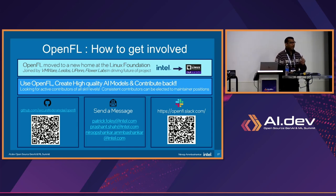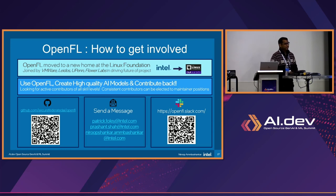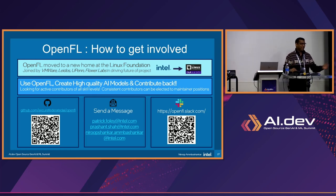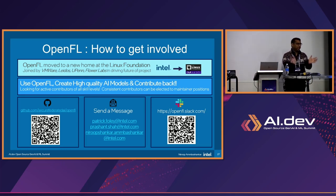Q: You're building on top of gRPC — is there a roadmap plan to integrate with more proprietary offerings like GCP Confidential Spaces, AWS, or Azure offerings? A: Yes. Privacy-preserving machine learning is its own domain. We are built on top of Gramine because SGX uses Gramine. We're working with the Intel SGX team, looking at their roadmaps, and seeing how we can integrate to make what we have more generally available. We do have plans in this direction.